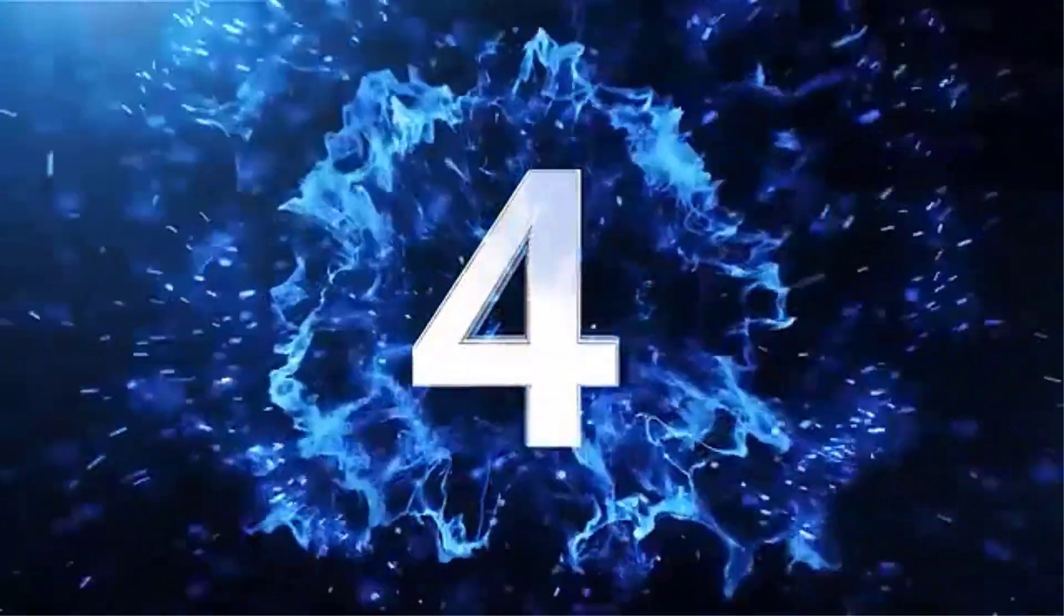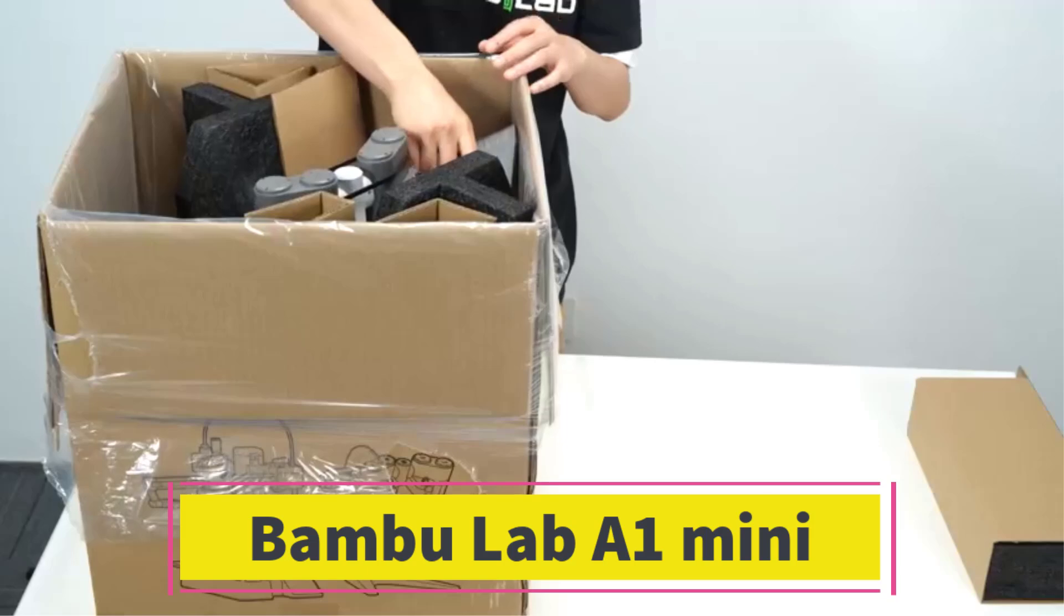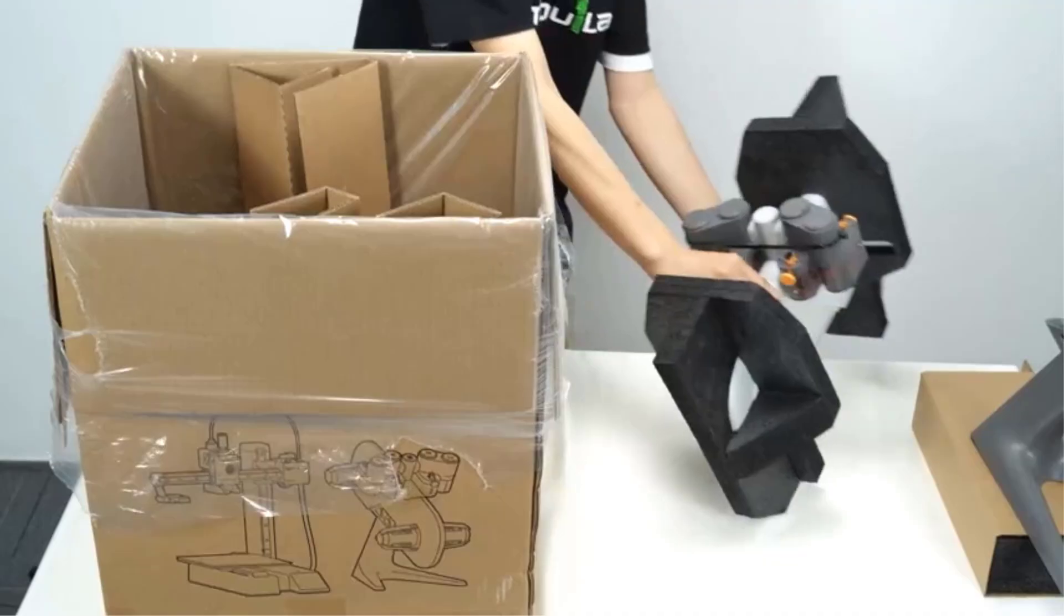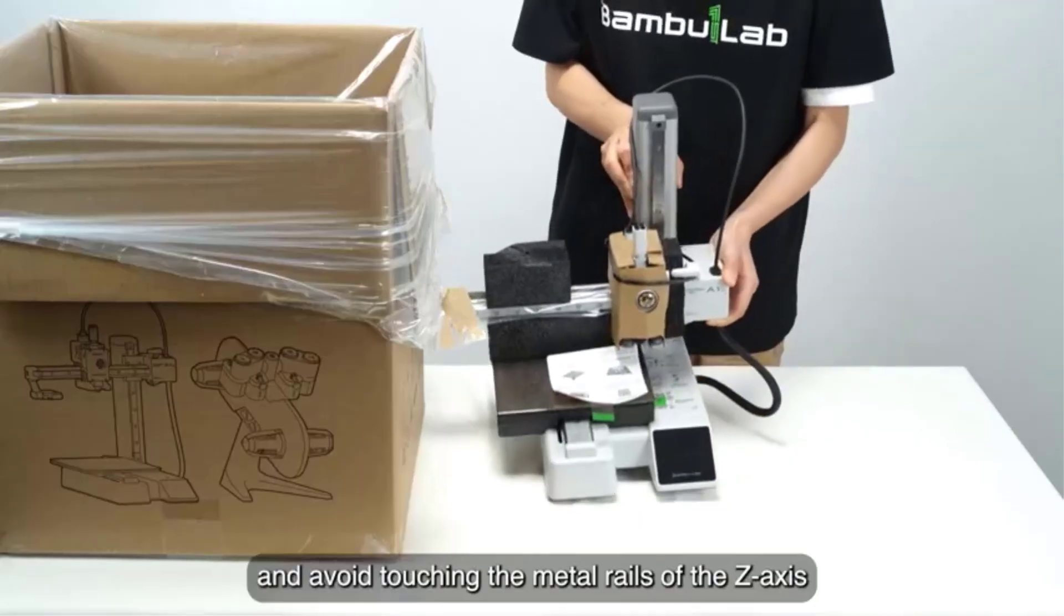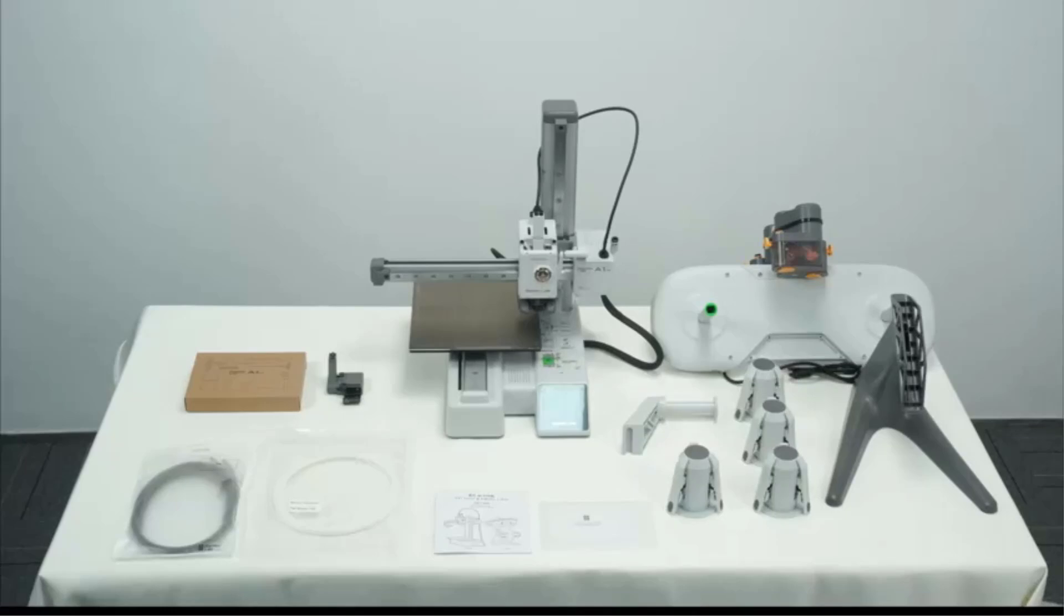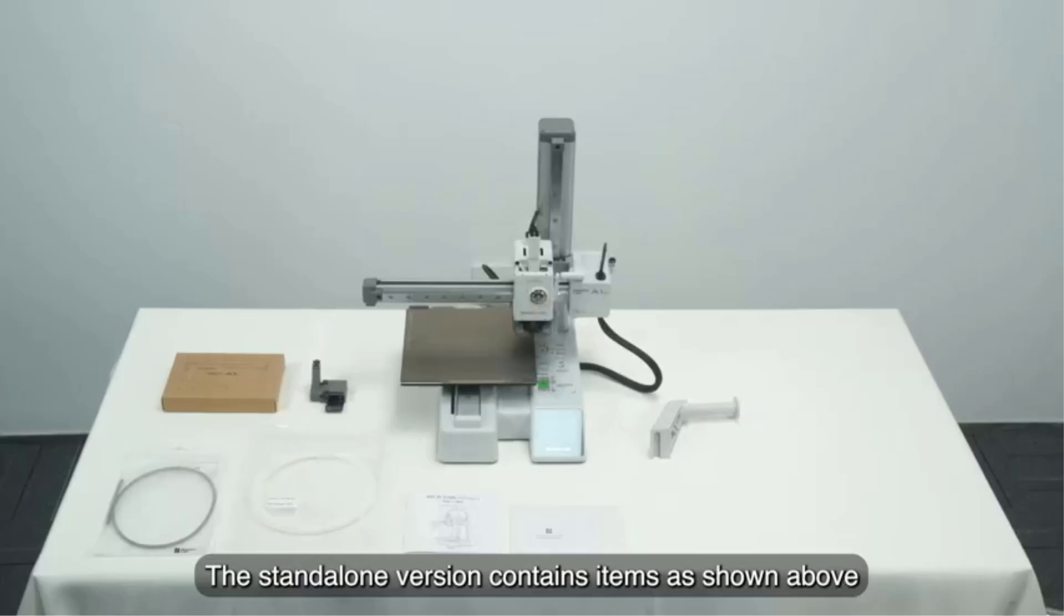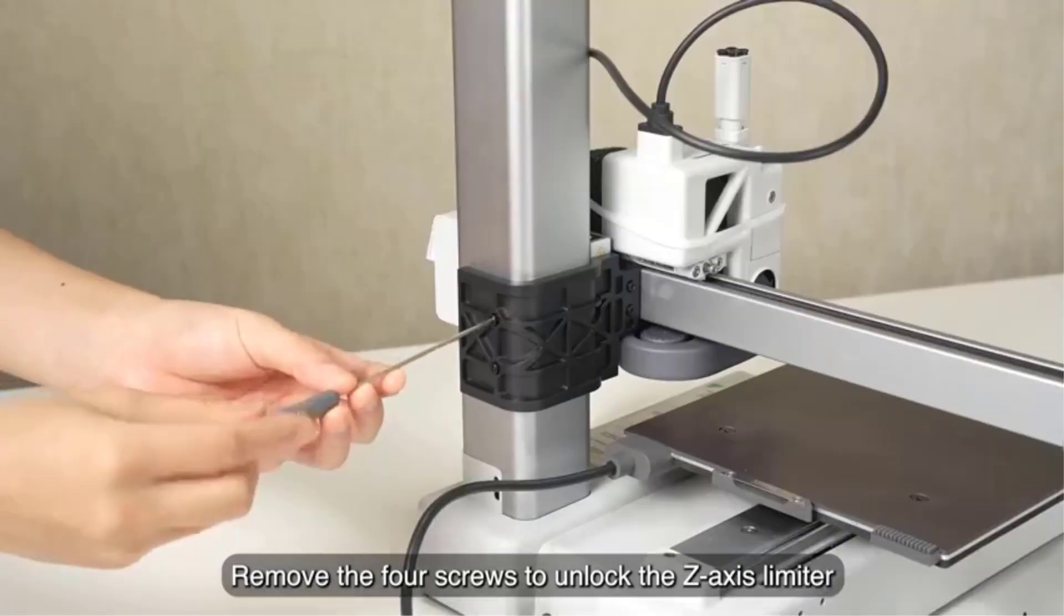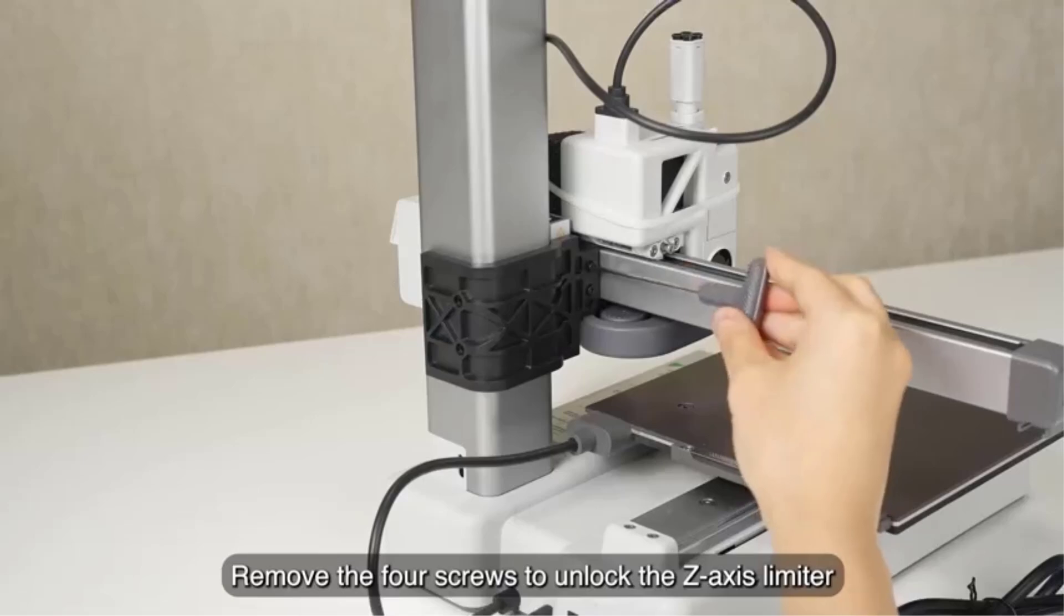Number 4. Bamboo Lab A1 Mini. The Bamboo Lab A1 Mini is a compact, high-speed, and multicolor 3D printer designed for ease of use and precision. With its quick 20-minute setup, it is ideal for both beginners and experienced users looking for a hassle-free printing experience. A standout feature of the A1 Mini is its multicolor printing capability when paired with Bamboo Lab's automatic material system, AMS Lite.